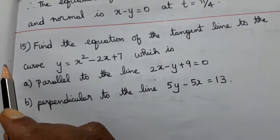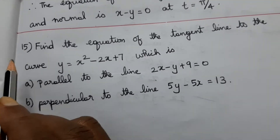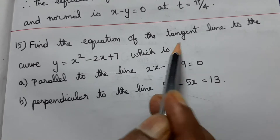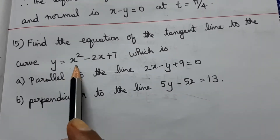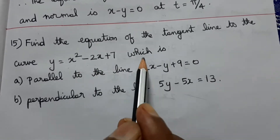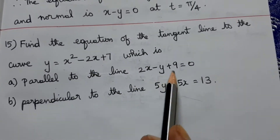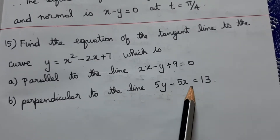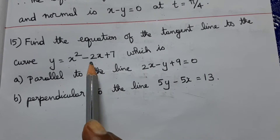Welcome to this lesson. Chapter 6, section 6.3, problem 15: Find the equation of the tangent line to the curve y = x² - 2x + 7, which is parallel to the line 2x - y + 9 = 0, and perpendicular to the line y - 5x = 13.